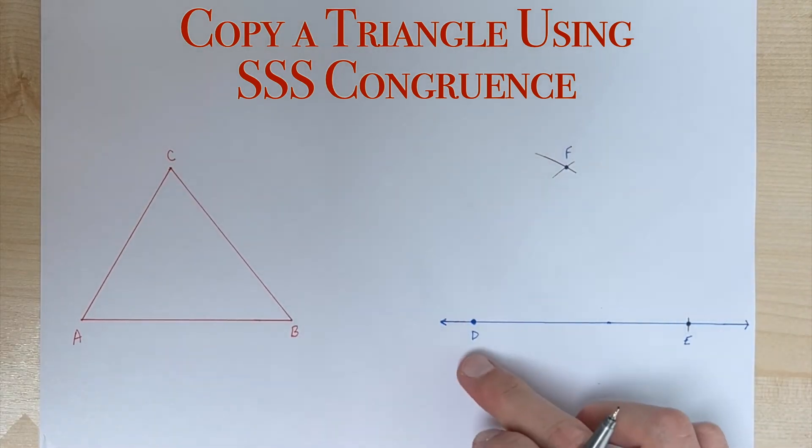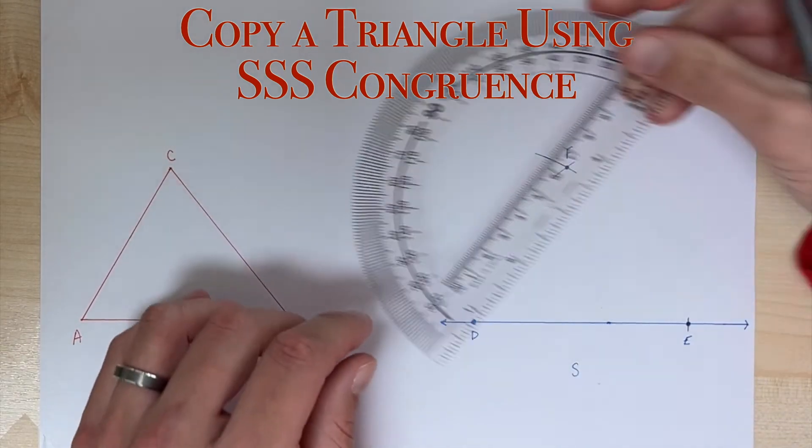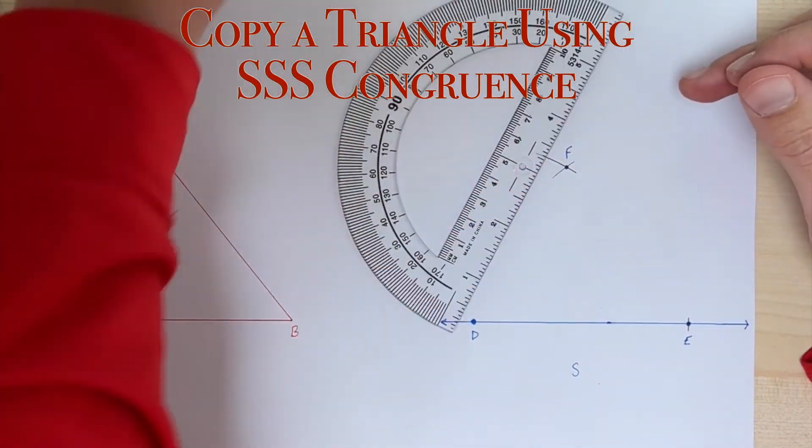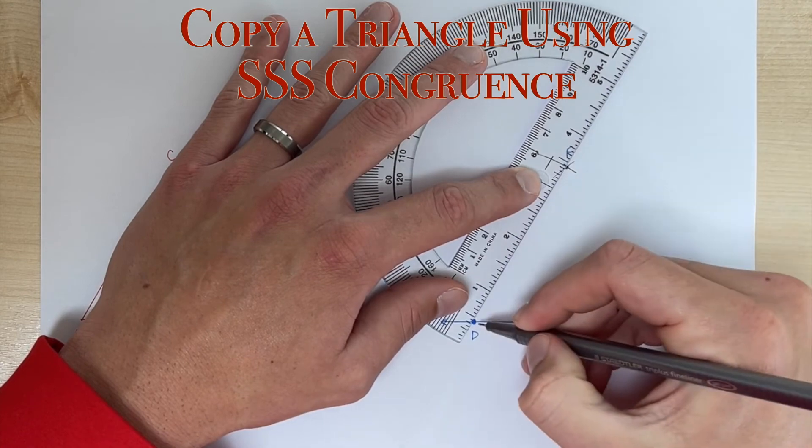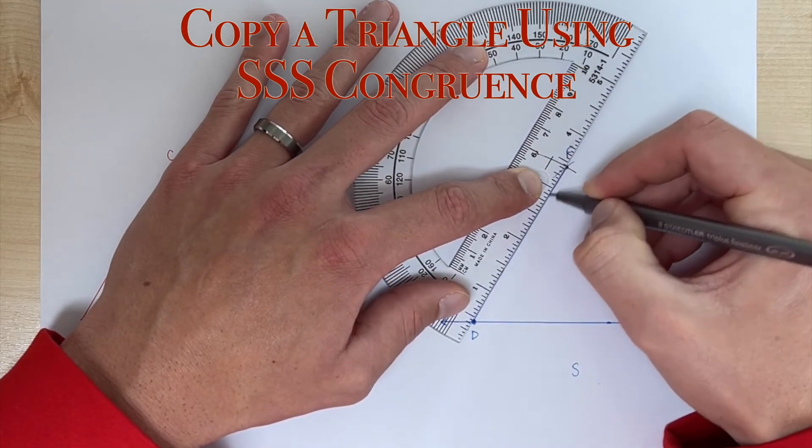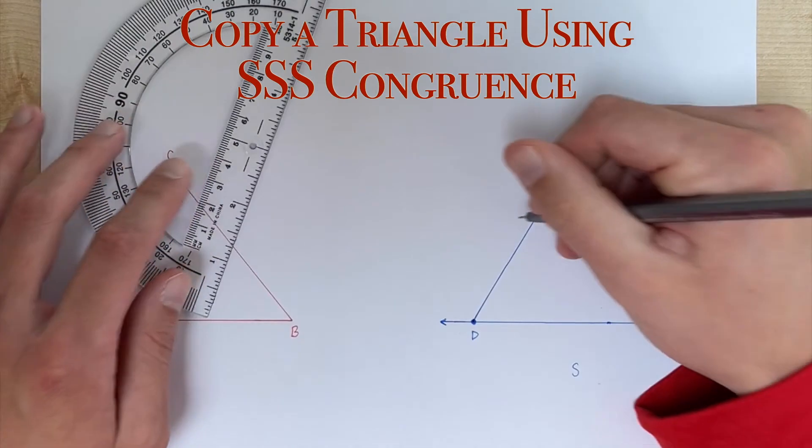Okay, so we know that side DE is congruent to AB, so there's one of our sides we know are congruent. Then we measured side AC with our compass and we brought it over here and drew the arc, so we know that that is congruent, so we'll draw our side here. So there's another one of our sides that we know is congruent.